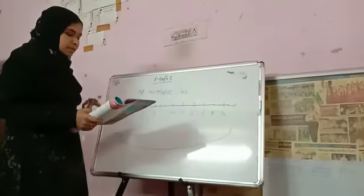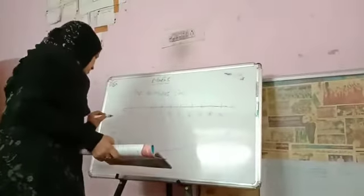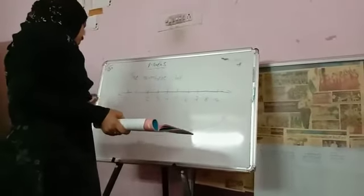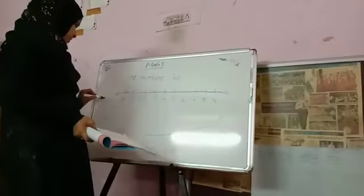The number line has numbers on it. The starting number, the first number, is zero.